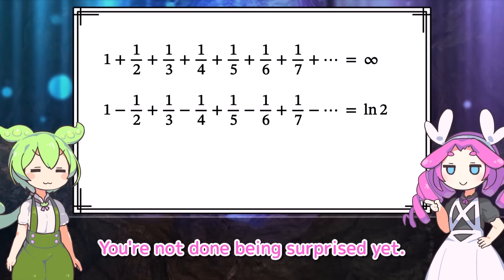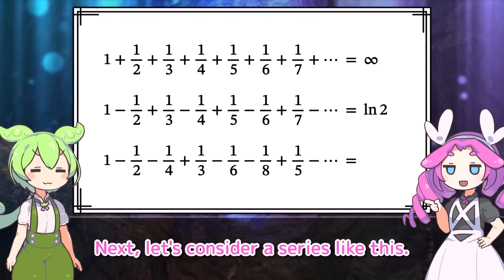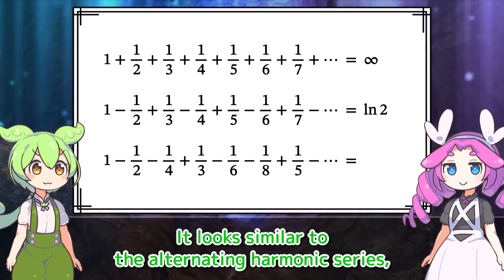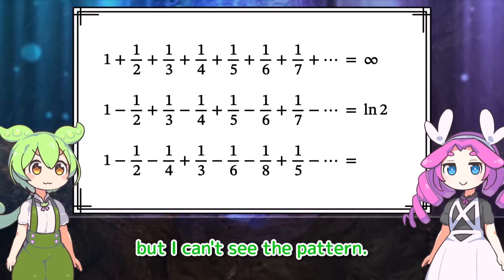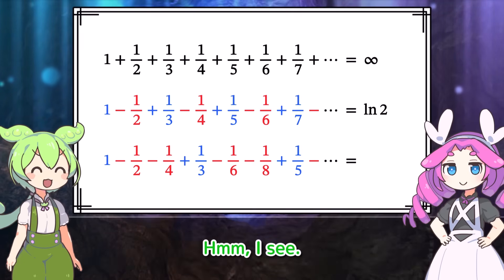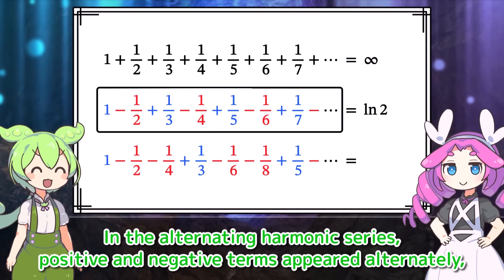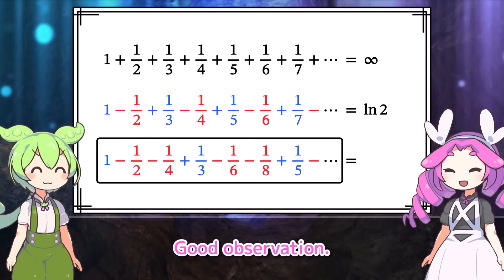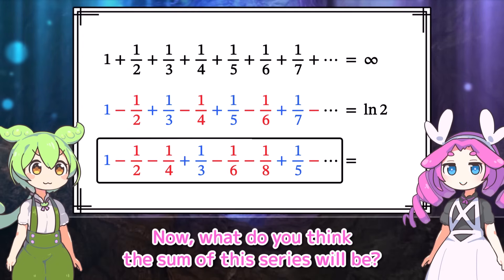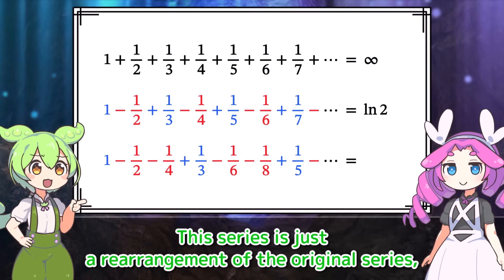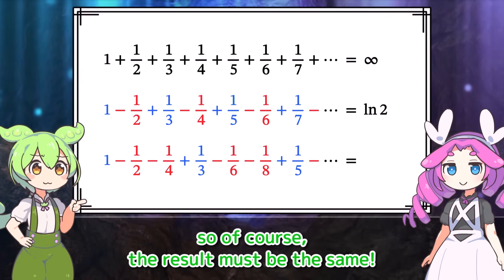That's kinda cool. You're not done being surprised yet. Let's consider a series like this. It looks similar to the alternating harmonic series, but in the alternating harmonic series positive and negative terms appeared alternately — this time, two negative terms follow each positive term. Now, what do you think the sum of this series will be? This series is just a rearrangement of the original series, so of course the result must be the same.